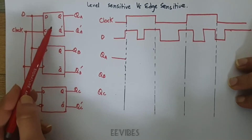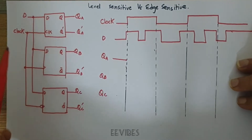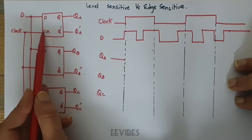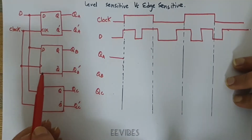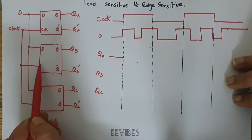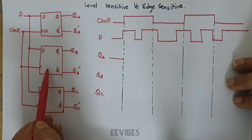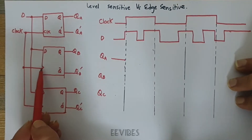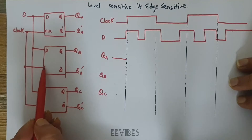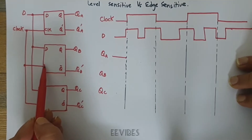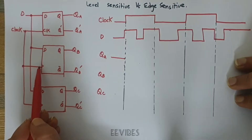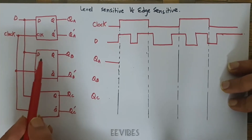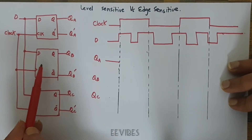The first element is the level-sensitive latch, since there is no symbol present before this clock input. The second element is the positive edge-triggered flip-flop. I know it's a positive edge-triggered flip-flop because before the clock input signal there is a triangle type or greater-than sign present, which indicates it will consider changes in the input D every time the clock signal switches from 0 to 1.